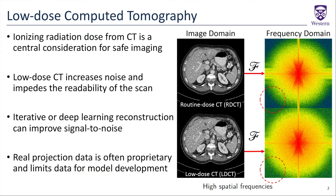In this work, we propose a dual-domain cascade of U-nets to denoise the filtered back projection of low-dose CT data. Specifically, we apply a U-net to the image domain reconstruction and a second U-net to its corresponding spatial frequency spectrum, in order to learn a convolutional filter that suppresses high spatial frequency noise while preserving frequencies that correspond to true spatial features.